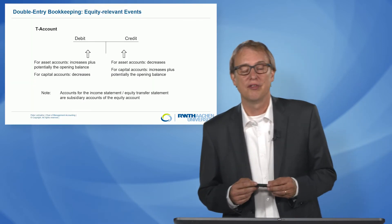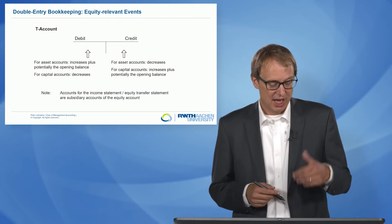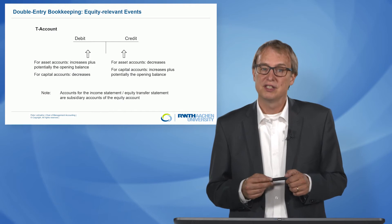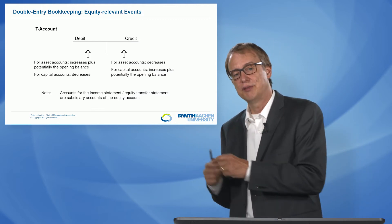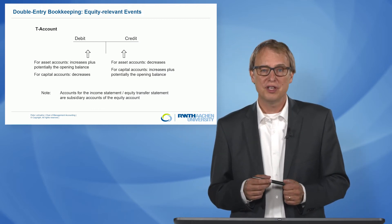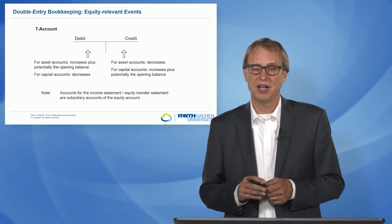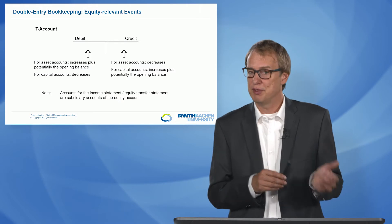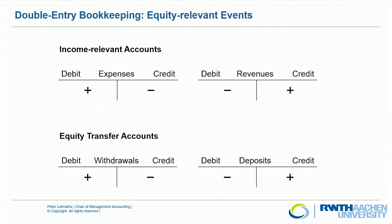You already know the structure of a T-account with a debit side on the left side and the credit side on the right side. Inferring from the structure of the balance sheet: if we have increases of assets, which are on the left side of the balance sheet, we book them on the debit side; if we have decreases, we book them on the right side, on the credit side. And just the opposite for capital accounts, because capital accounts are on the right side of the balance sheet, so we book decreases of capital accounts on the debit side and increases on the credit side.